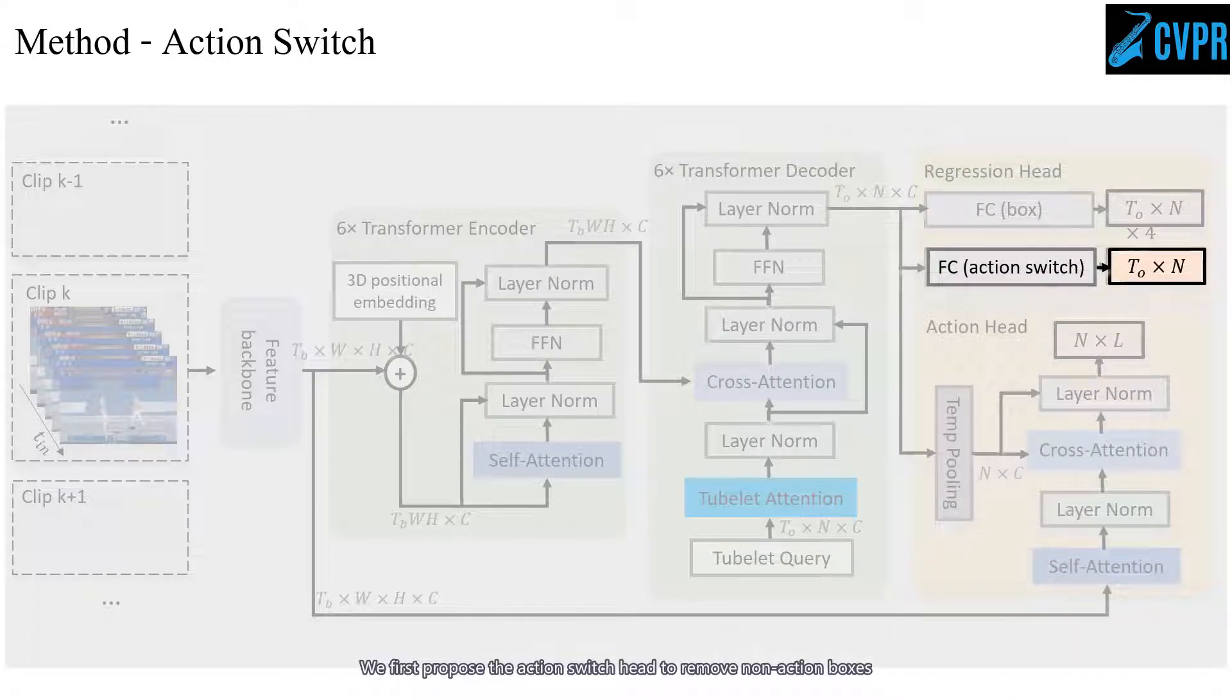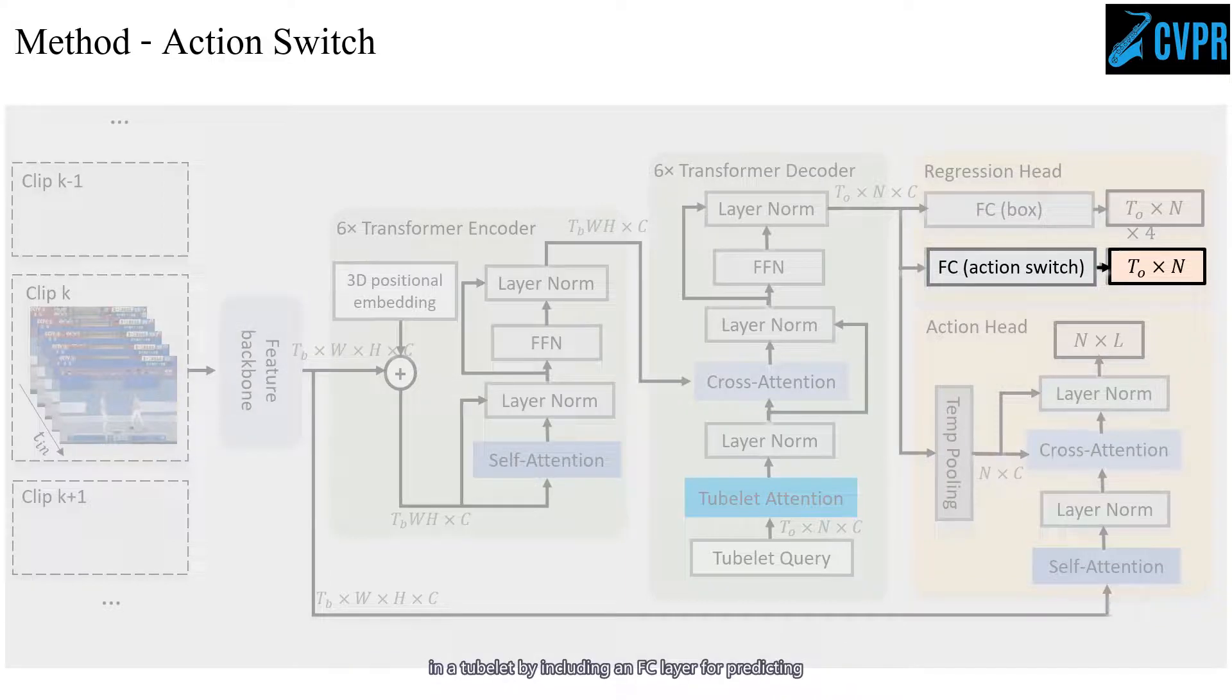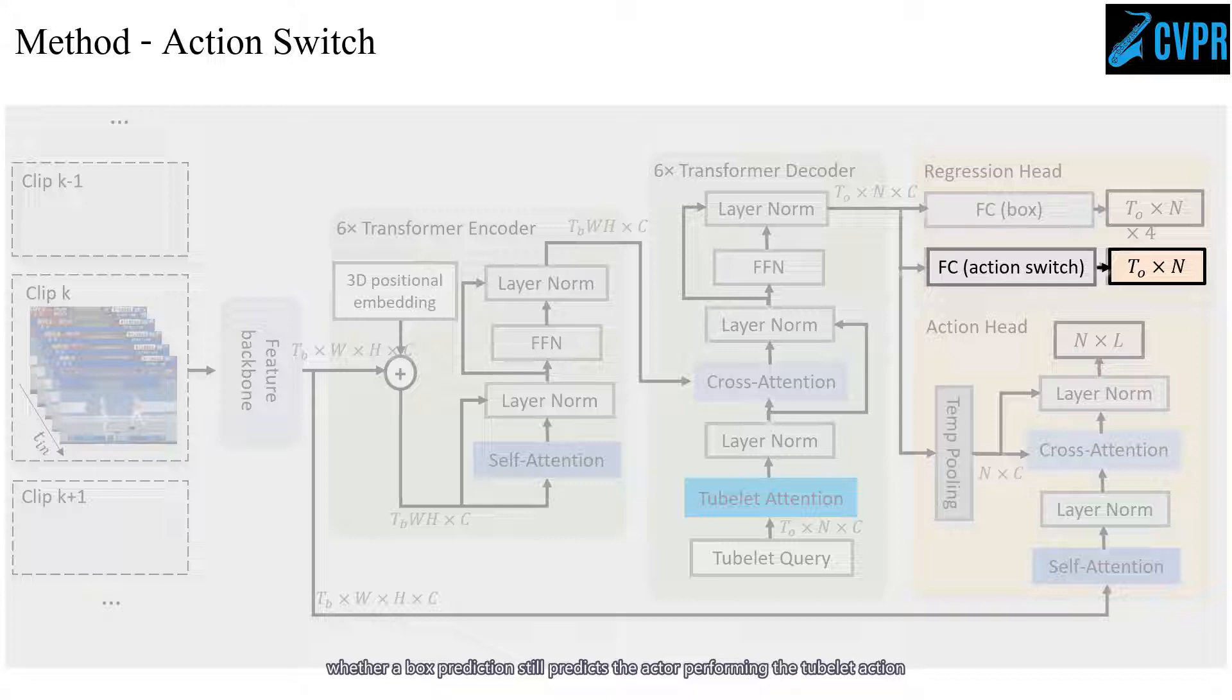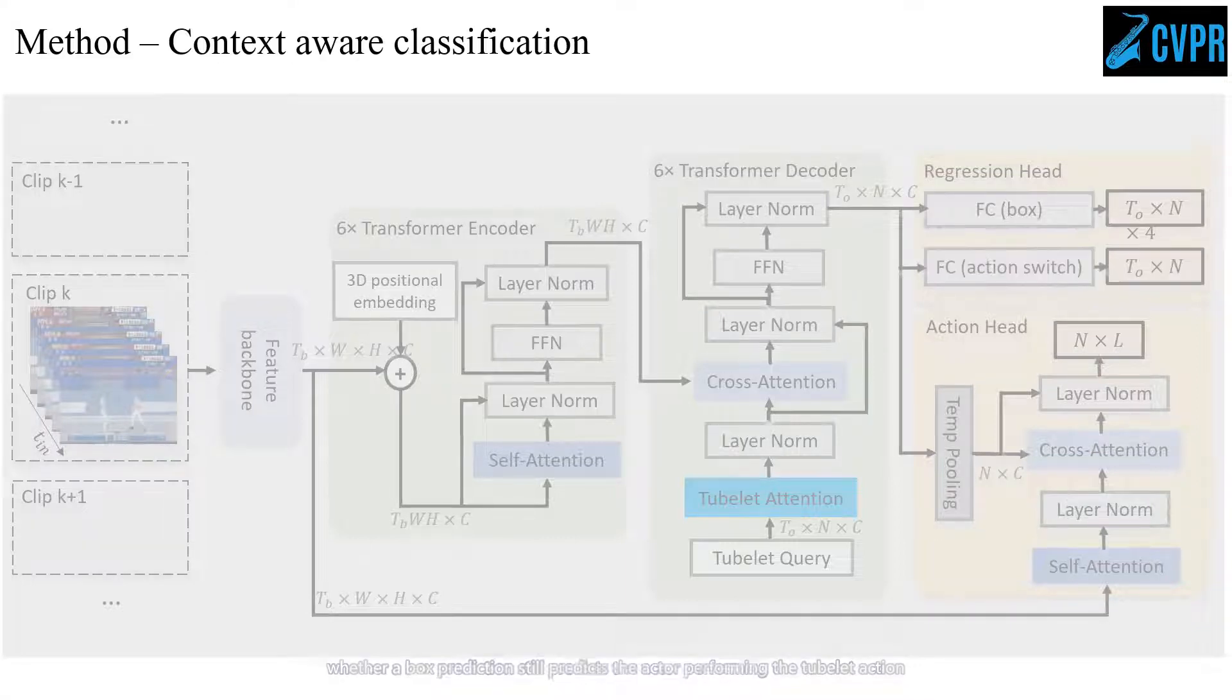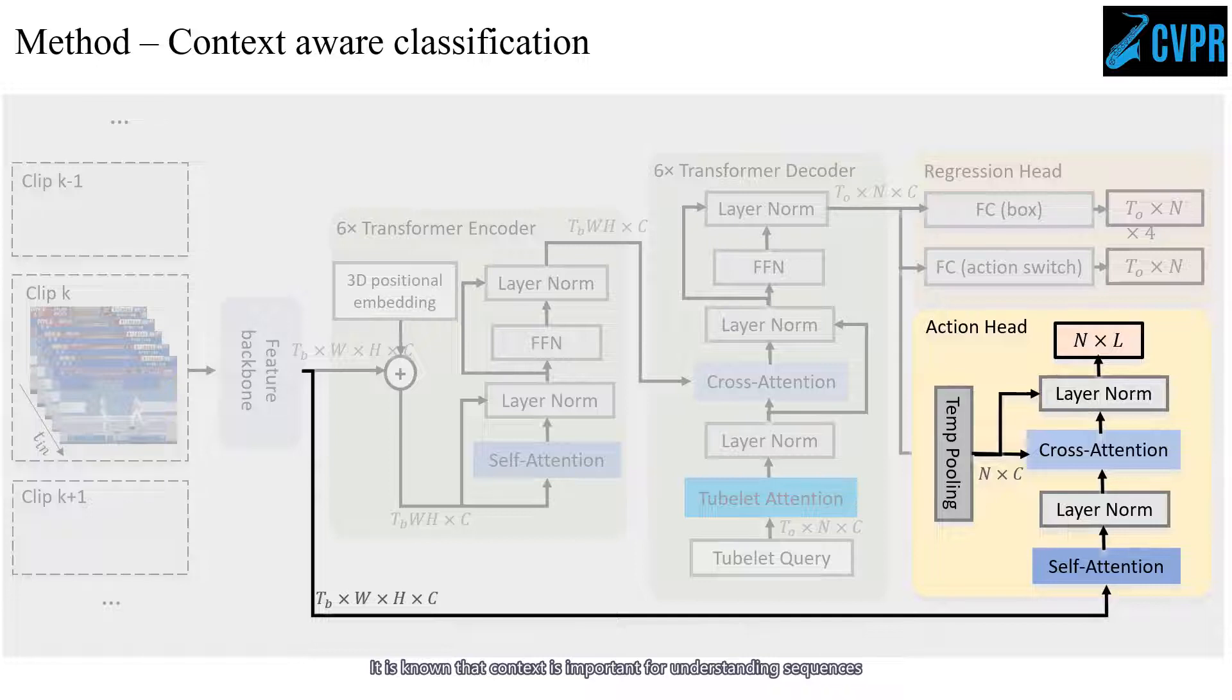We propose an action switch head to remove non-action boxes in a tubelet by including an FC layer for predicting whether a box prediction still contains the actor performing the tubelet action. It is known that context is important for understanding sequences.